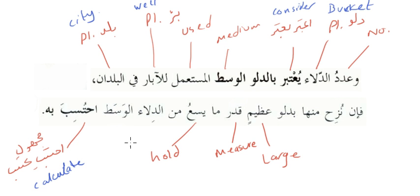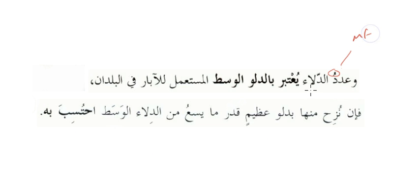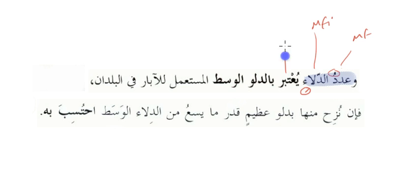Now let's look at the grammar. This is the مضاف and therefore the next one will be the مضاف إليه. Both make the مبتدأ. Then we have يعتبر which is فعل مجهول.